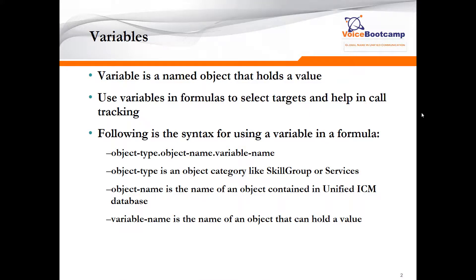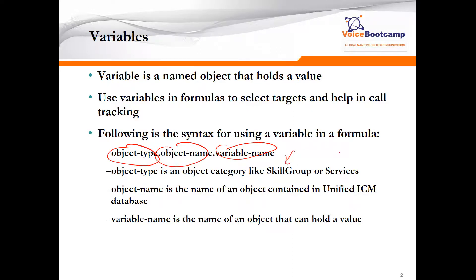When creating a variable, we must define the variable. Variable names are actually created in a certain format. For example, you have the object type, object name, and the variable name. The object type is an object category — like what kind of variable service or category you're looking for. Are you looking for information related to a skills group,